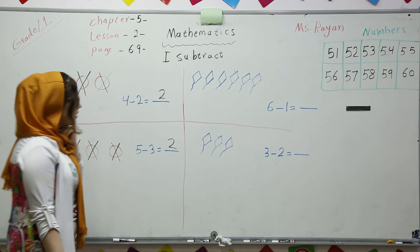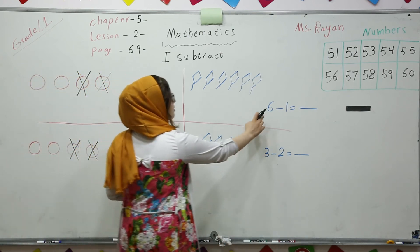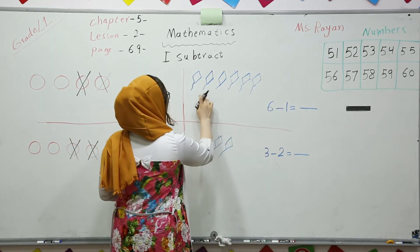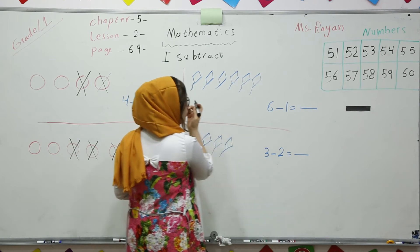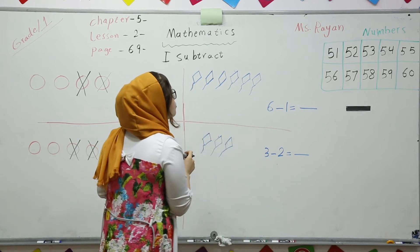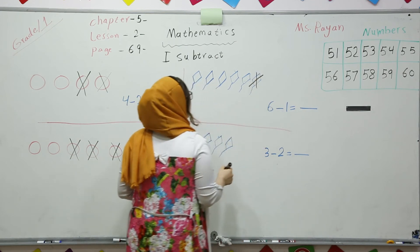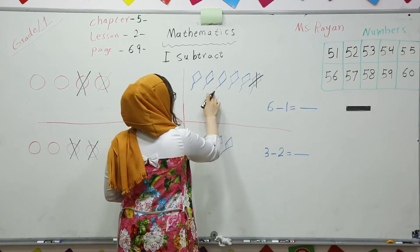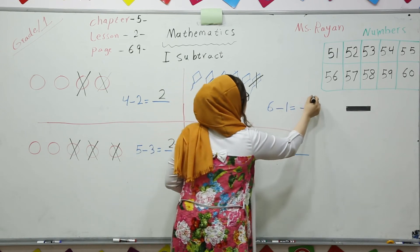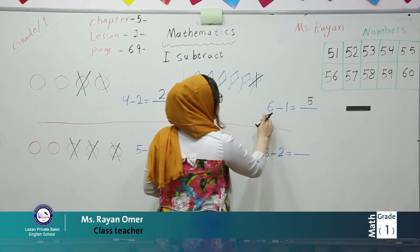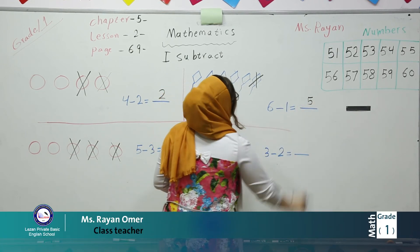Now, we have got kites, okay? 6 minus 1. 1, 2, 3, 4, 5, 6. We have got 6 kites. Minus 1, cross out only 1. How many are left? 1, 2, 3, 4, 5. 5, you see? 6 minus 1 equals 5.